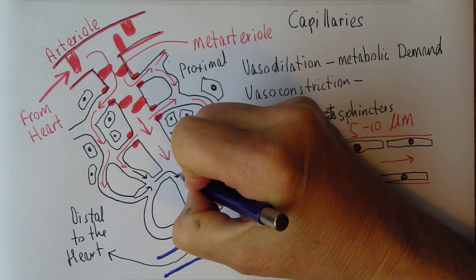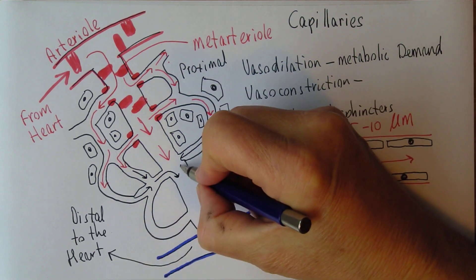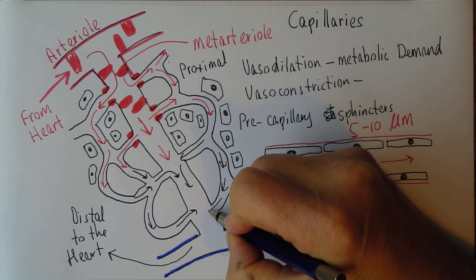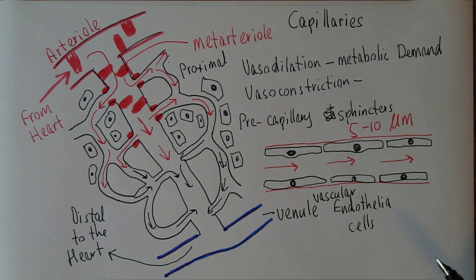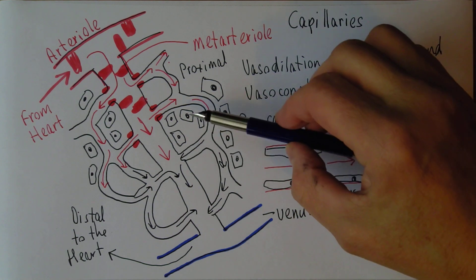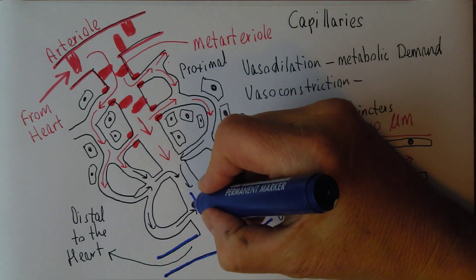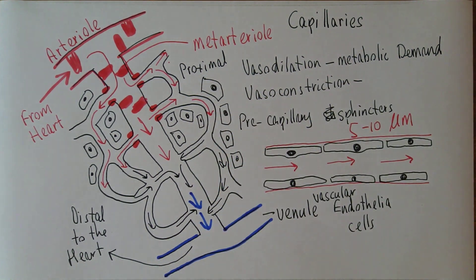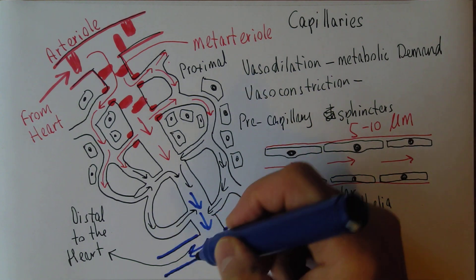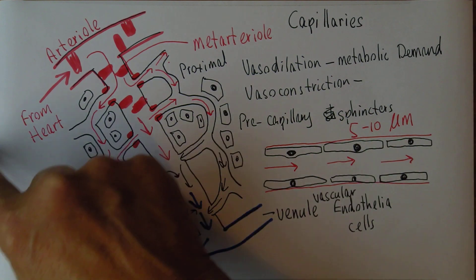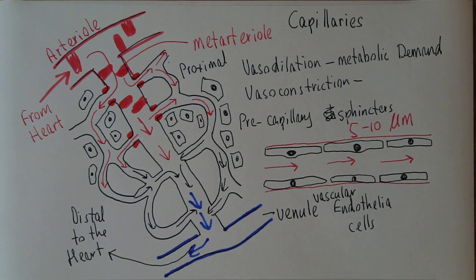Blood is going to return at the distal part of the capillary bed. We normally draw this as dark blue because the blood is relatively deoxygenated. In practice, only about 25% or so of the oxygen is given up to the tissues, so the blood returning to the venule is somewhat deoxygenated — but typically not very deoxygenated. That would depend on the workload. The blood then returns to the heart, supplied by the arterial system and drained by the venous system.